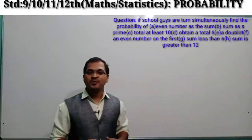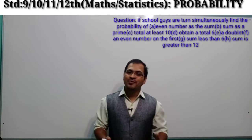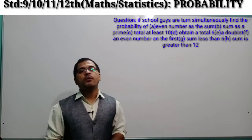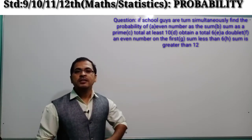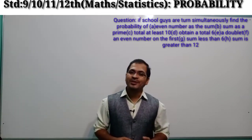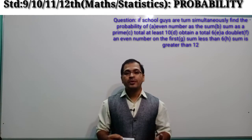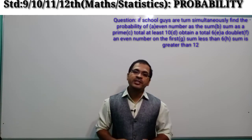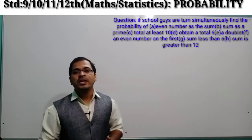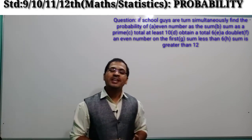Hello students, Jai Hind Vande Matram. Welcome back to your class Ravi Sajji Maths, the easier and finest way to learn the concepts of mathematics from standard 9 to 12 with advanced mathematics. In our previous video lecture of probability, we studied the possible outcomes if one card is drawn from a pack of 52 cards and found the probabilities for a few questions. In today's video lecture, we are going to throw two dice and find out the number of total events, and on that basis, find the probability of different events.